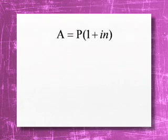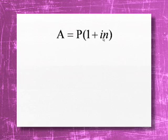First of all we're going to look at Simple Interest. Simple Interest is interest earned once a year, depending on the original amount. The formula uses A for future value, P for present value, I for the interest rate, and N for the time period — that is, how many years we are investing.